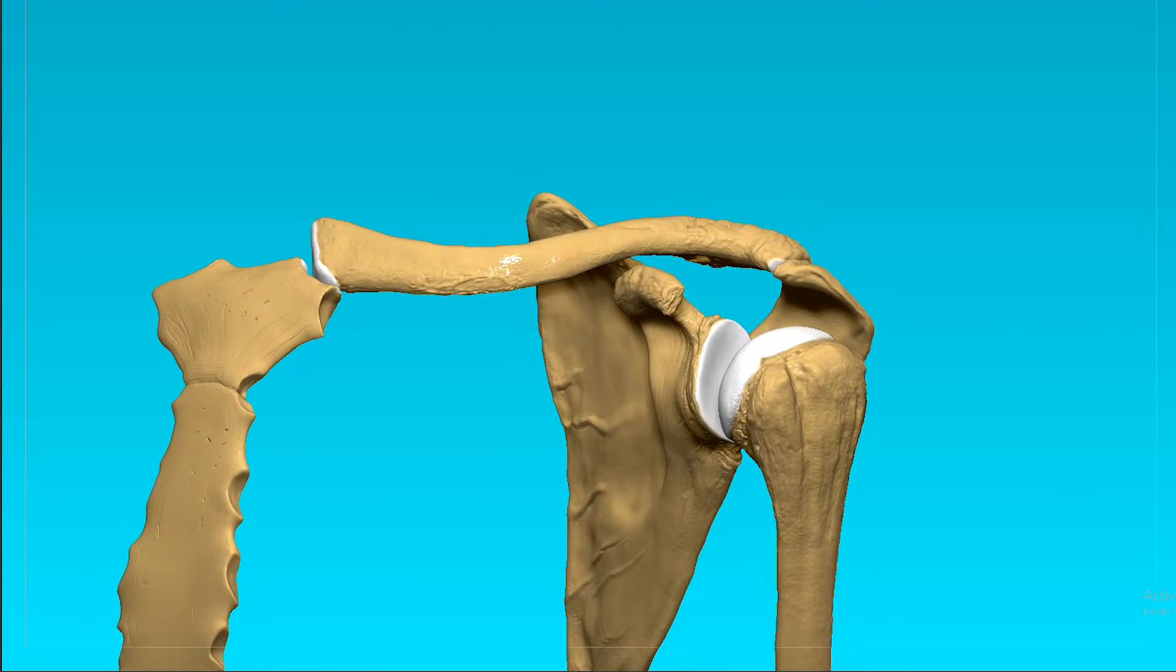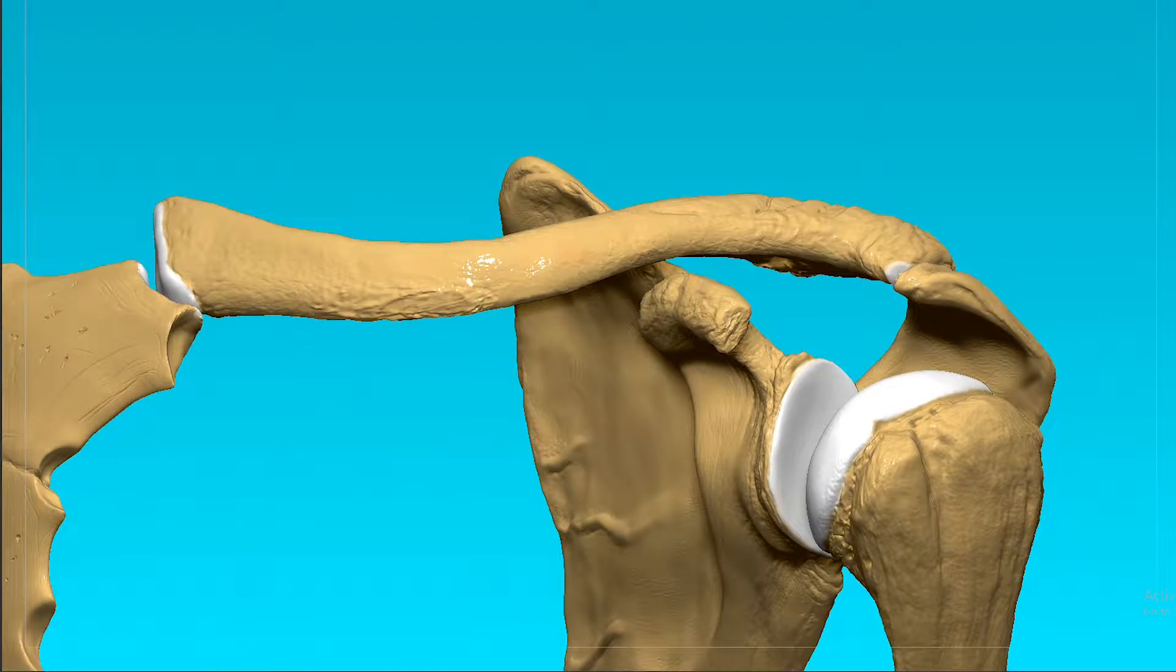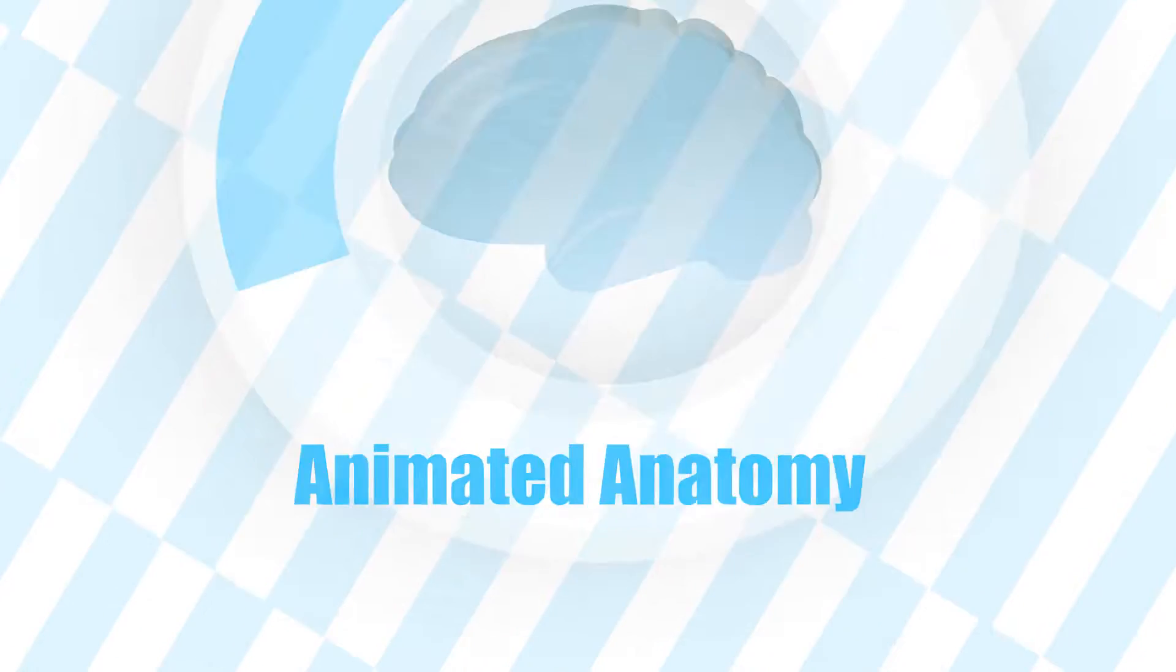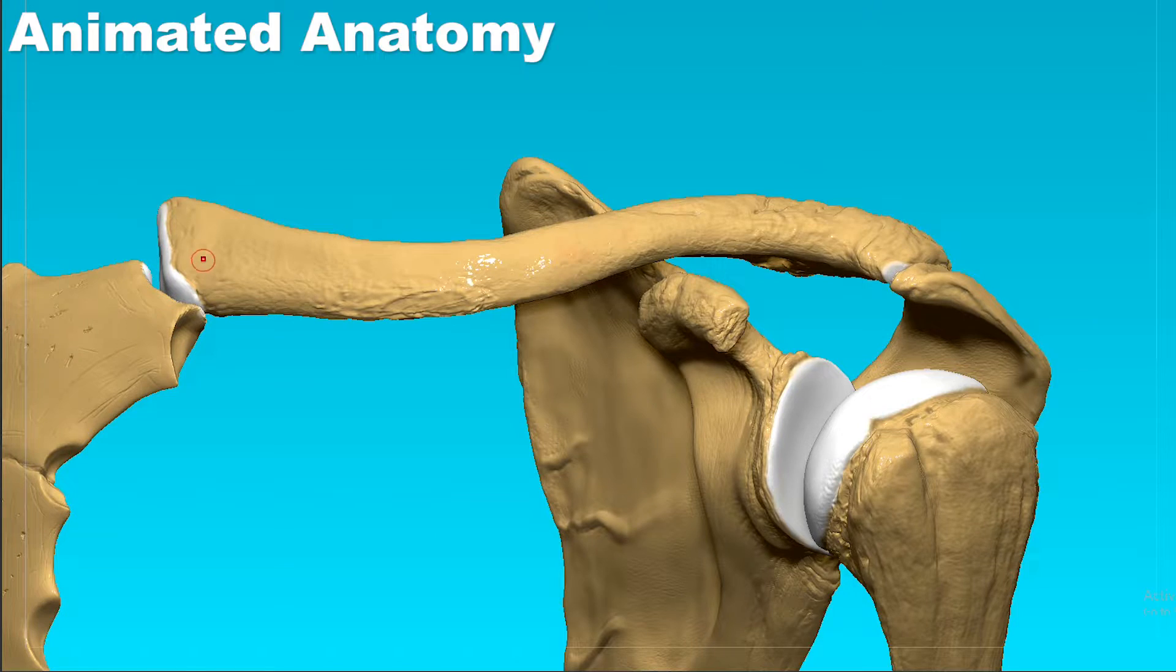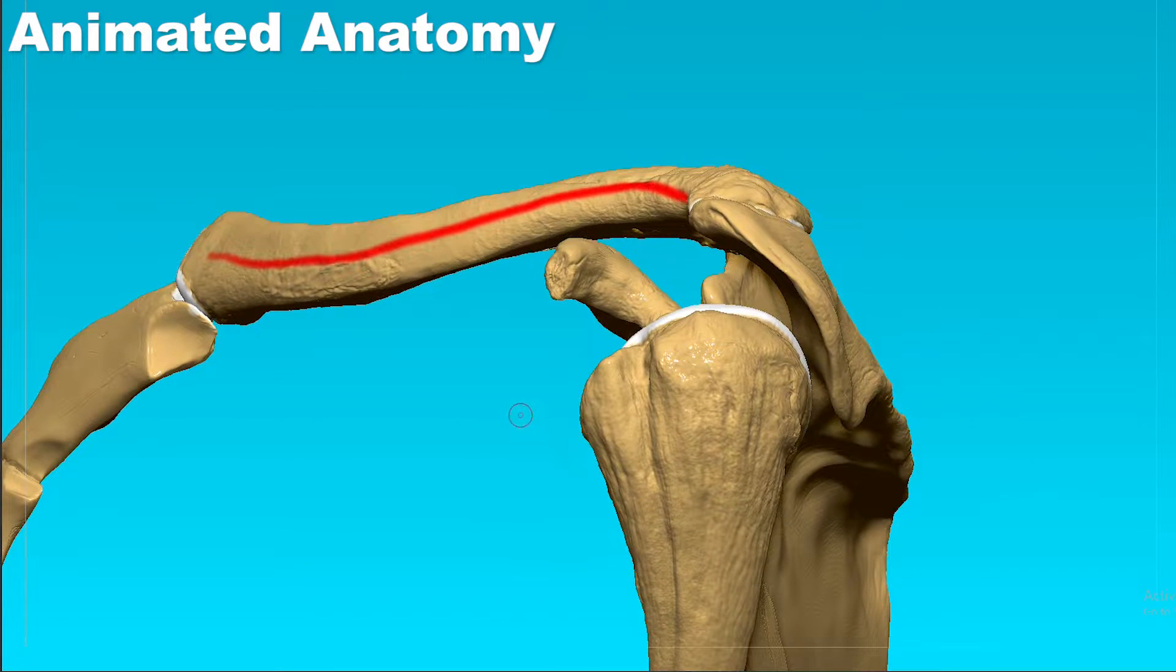We start off by explaining the bones of the shoulder girdle, starting with the clavicle. The clavicle is an S-shaped long bone and is the only bone that is horizontal in the body.